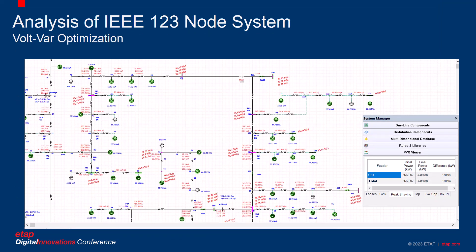Our last study is volt-var optimization or CVR. We run CVR with an intention to lower the operating voltage as close to 95% as possible. We are running this study in revision one where all the loads are 100% constant impedance, hence the loads appear green on screen. After running VVO calculations, we can see that the load profile of different buses is close to 95 or 96%. Several loads are actually consuming lower power than rated. For example, at bus 107, which is rated at 44.72 kVA, that load is actually consuming 40.7 kVA. All of these sum up to a grand total of 370.94 kilowatts of power saved due to CVR. This is the peak shaving amount, which is pretty significant and will matter a lot during peak demand hours.